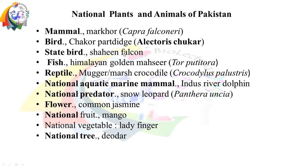With this, there is also the state bird. If the question comes about the state bird, it is Shaheen Falcon. Allama Iqbal has given it that status, so it will be our state bird — it is not the national bird. The national bird is Chakor Partridge, commonly called Chakor, with scientific name Alectoris chukar.